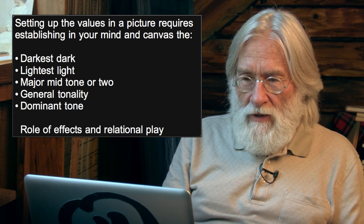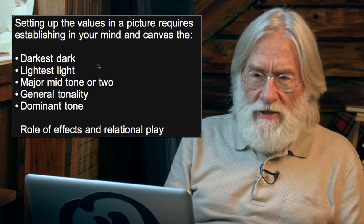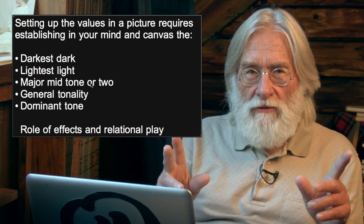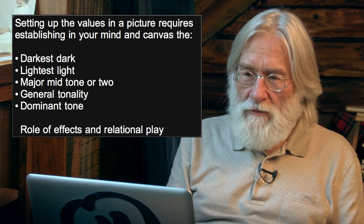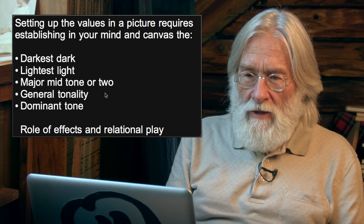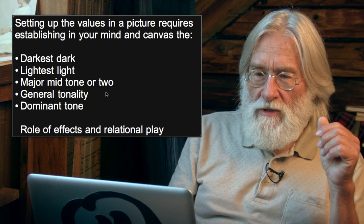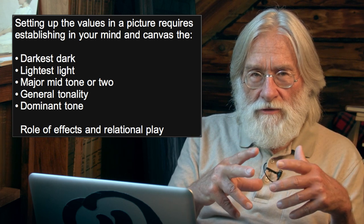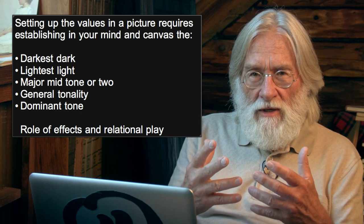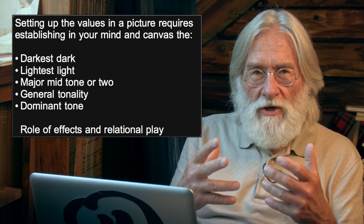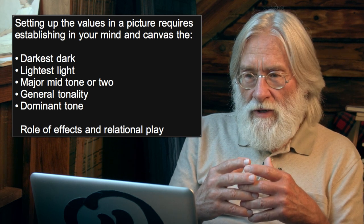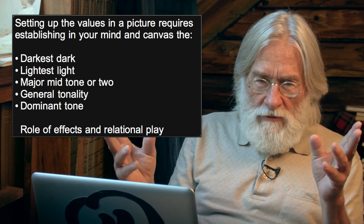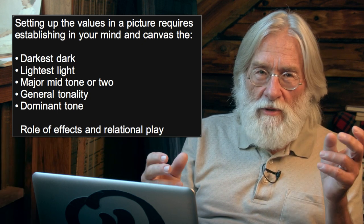Besides finding the darkest dark and lightest light, some people talk about searching out a major mid-tone, or anchoring to a major mid-tone and letting your darks and lights move in from there. That sounds arbitrary, but it isn't over time. Nature itself, if you're an impressionist, is telling you what value range you need to get a certain quality of chroma. Max Meldrum notes there's a range between 1 and 20 in a studio — up to white, down to black.